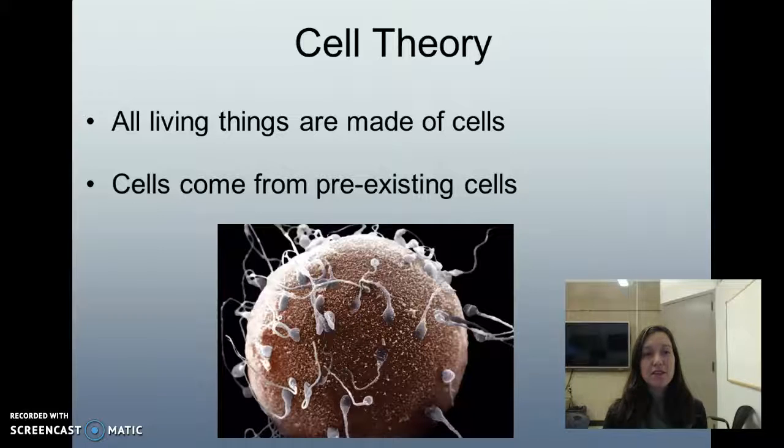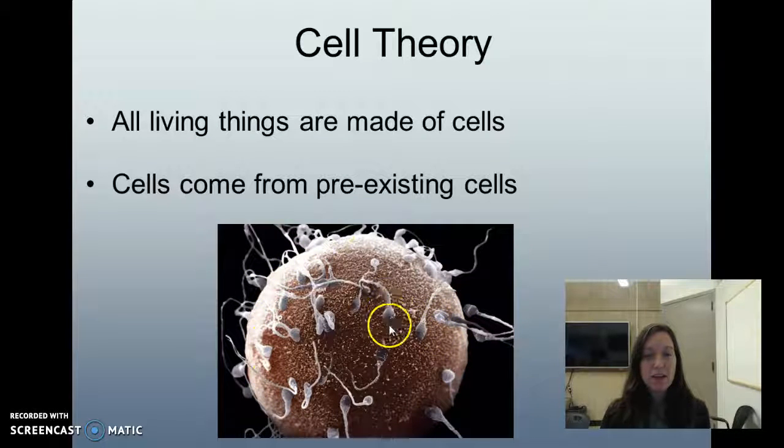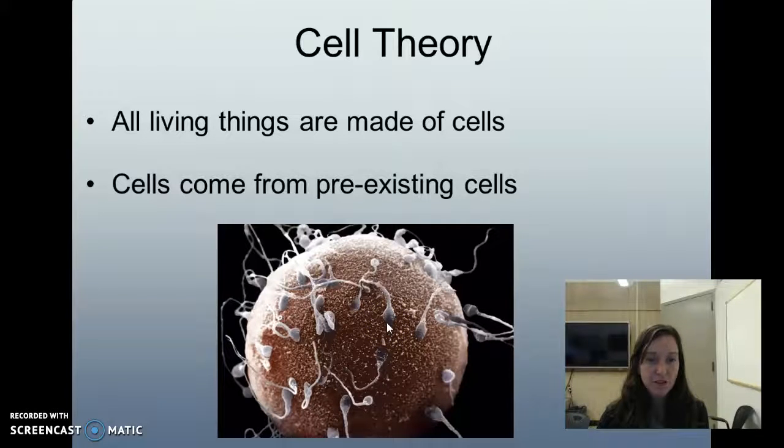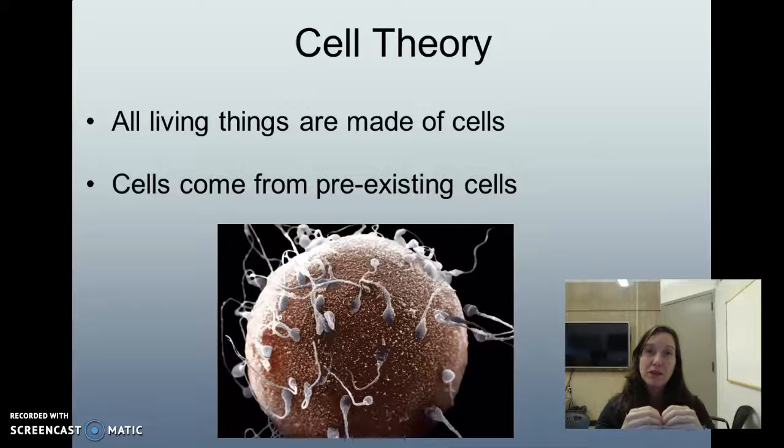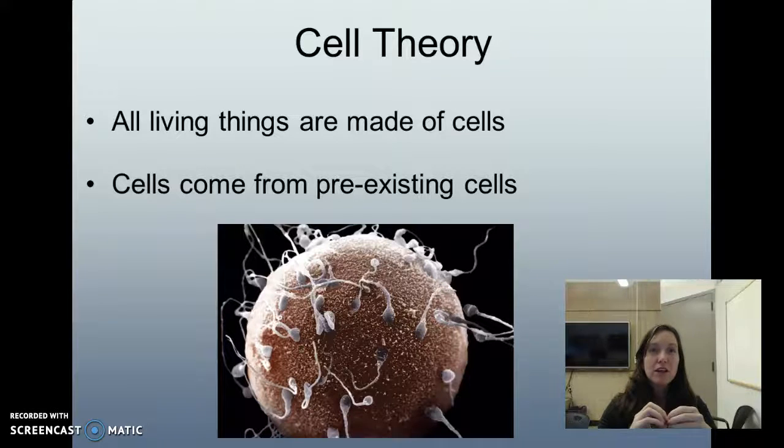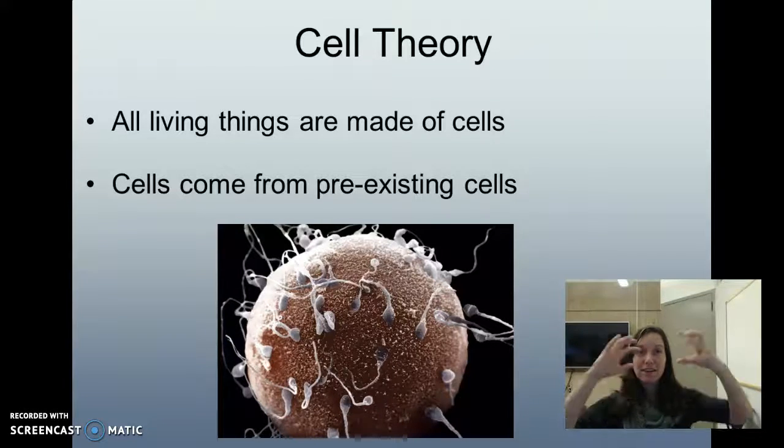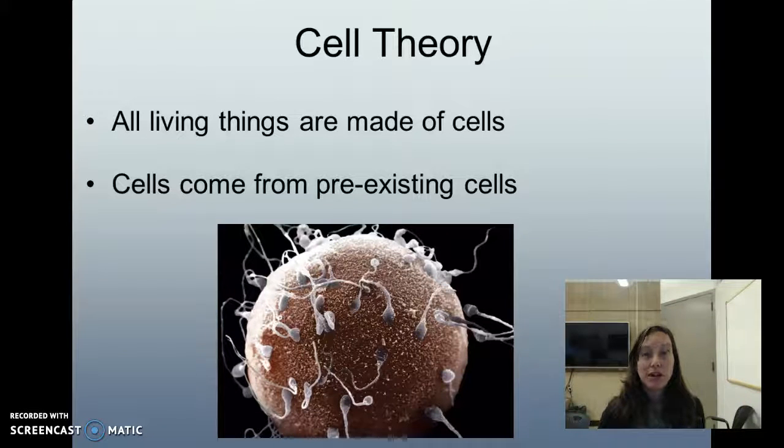Another part of the cell theory is that all cells come from pre-existing cells. So your body, all those trillions of cells that make you up, started out as a single egg cell that was fertilized by the sperm cell. That sounds like two cells, but when a sperm fertilizes an egg, it simply sends its genetic material into the egg cell. So the egg cell becomes fertilized as one single cell. Then that cell will split into two. There's our cellular replication, the two to four, the four to eight, eight to sixteen, and over time we end up with trillions of cells. All those cells came from the fertilized egg cell. It's a really interesting thing to think about.